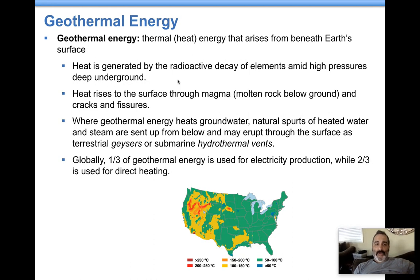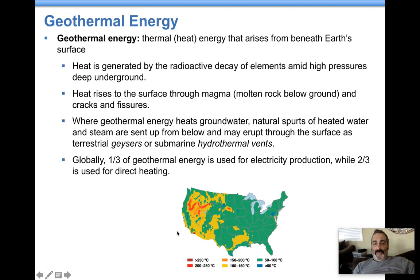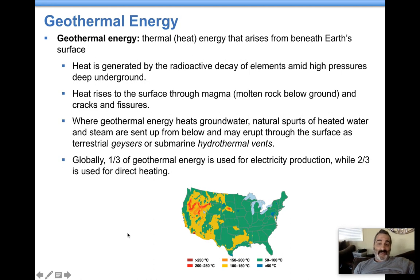The problem with geothermal energy is there aren't a lot of places that have good sources of it. There's a plant in Northern California called the Geysers that produces electricity for over 700,000 homes in that area. Yellowstone National Park is another example where you can see geysers, and you're going to see geothermal energy wherever you have these geysers appearing.